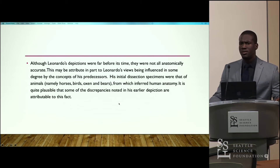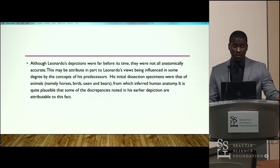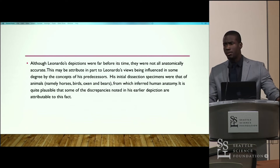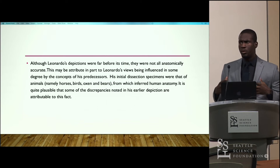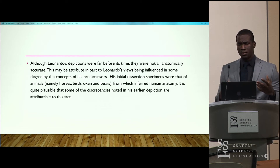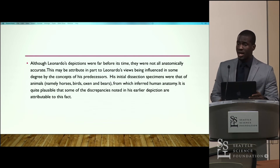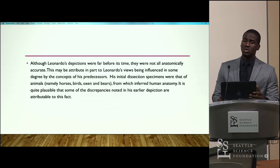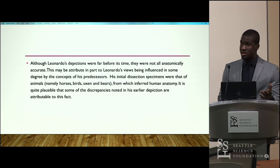Leonardo da Vinci's work, in comparison to his contemporaries, was actually far ahead of his time. However, some of his work was not completely accurate. This may be attributed to the fact that at the time, many anatomists' views and concepts were heavily influenced by their predecessors. Also, one other contributing factor was that his earlier dissections were actually done on animals — birds, oxen, horses, just to name a few.